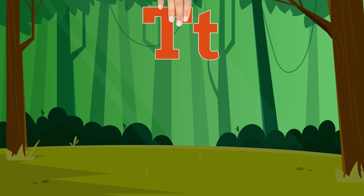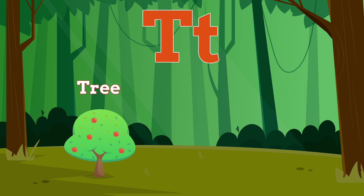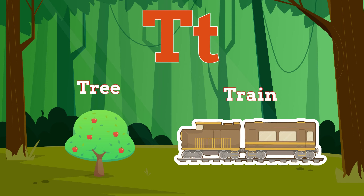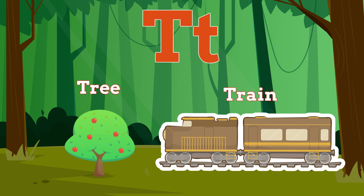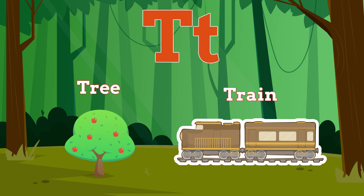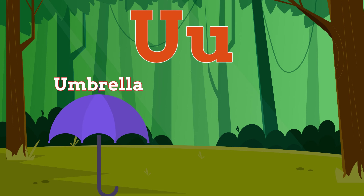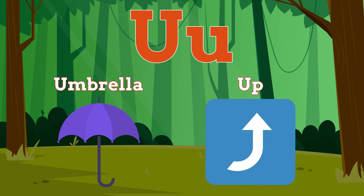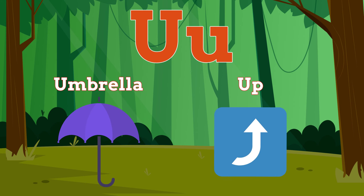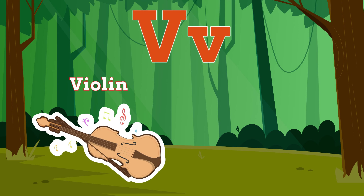T is for Tree. T, T, Tree. T is for Train. T, T, Train. U is for Umbrella. U, U, Umbrella. U is for Up. U, U, Up.